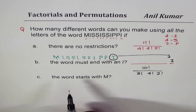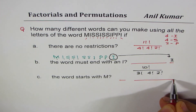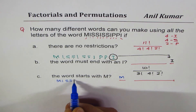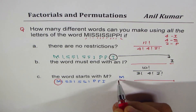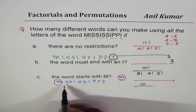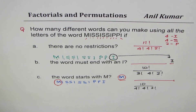Case 3: the word starts with M. We fix M at the start, leaving 10 letters with four I's, four S's, and two P's. The answer is 10 factorial divided by 4 factorial times 4 factorial times 2 factorial. I hope this gives you a clear concept of finding arrangements with repeated or identical elements. Feel free to post your comments and questions — thanks and all the best!